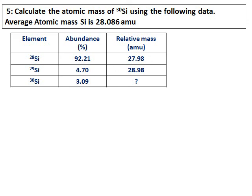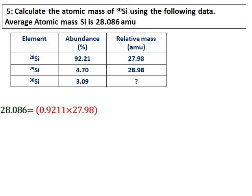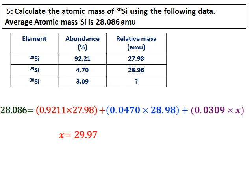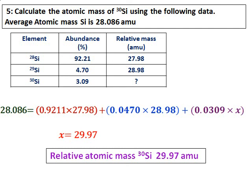Calculate the atomic mass of silicon-30 using the following data. The average atomic mass of silicon is given, along with the percentage abundances of three silicon isotopes — silicon-28, 29, and 30 — and the relative masses of two of the isotopes. You must calculate the relative mass of the third isotope. Set up the equation: average atomic mass equals abundance times relative mass. If the unknown relative mass of silicon-30 is x, solving gives x as its relative atomic mass.